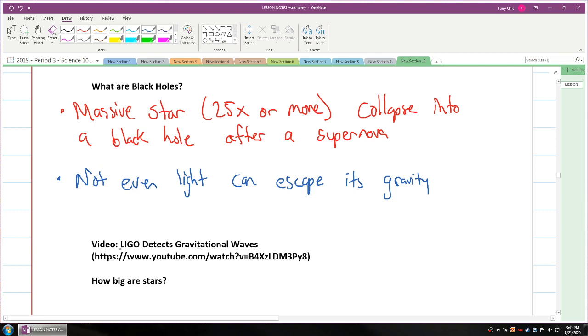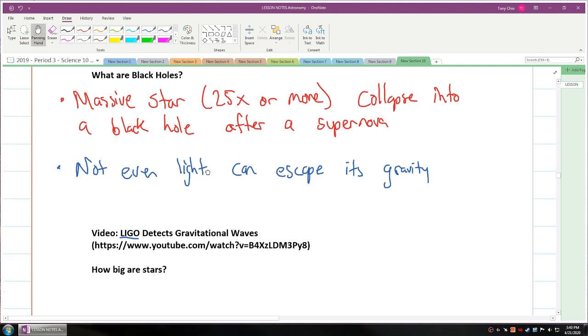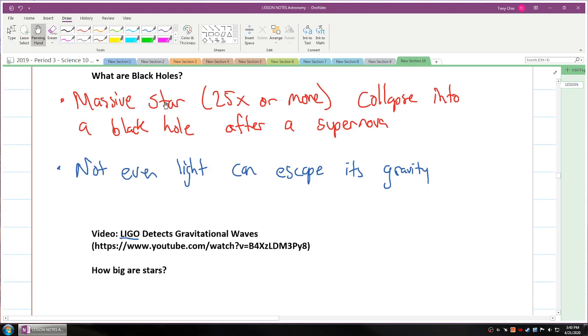A couple years ago a bunch of scientists from LIGO detected what we call gravitational waves and they found that waves were traveling to Earth from two black holes that collided with each other.